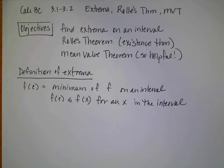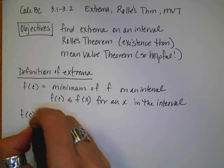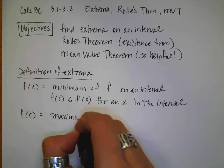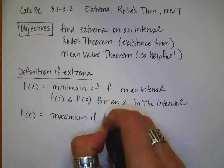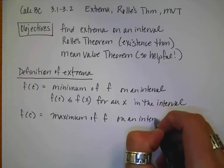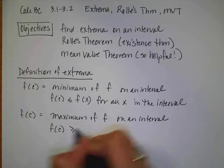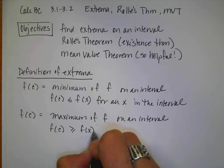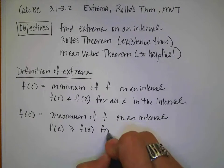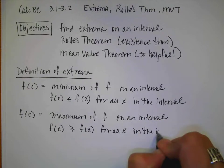So it just means that it's going to be the smallest y value in an interval. On the other hand, if I have f of c is a maximum of a function on an interval, then it's because f of c is greater than or equal to f of x — it is the largest y value for all x in the interval.